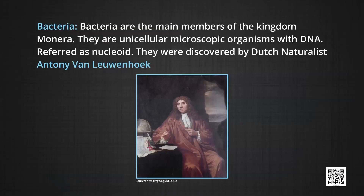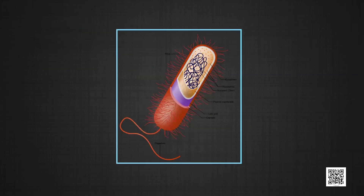Bacteria are the main members of Kingdom Monera. They are unicellular microscopic organisms with DNA referred to as nucleoid. They were discovered by Dutch naturalist Anton van Leeuwenhoek. Bacteria are ubiquitous, very minute — 1 to 10 micrometres in length — and found in different shapes. Some bacteria are known as pleomorphic as they have the ability to change their body shapes. According to shape, they can be grouped under four categories.